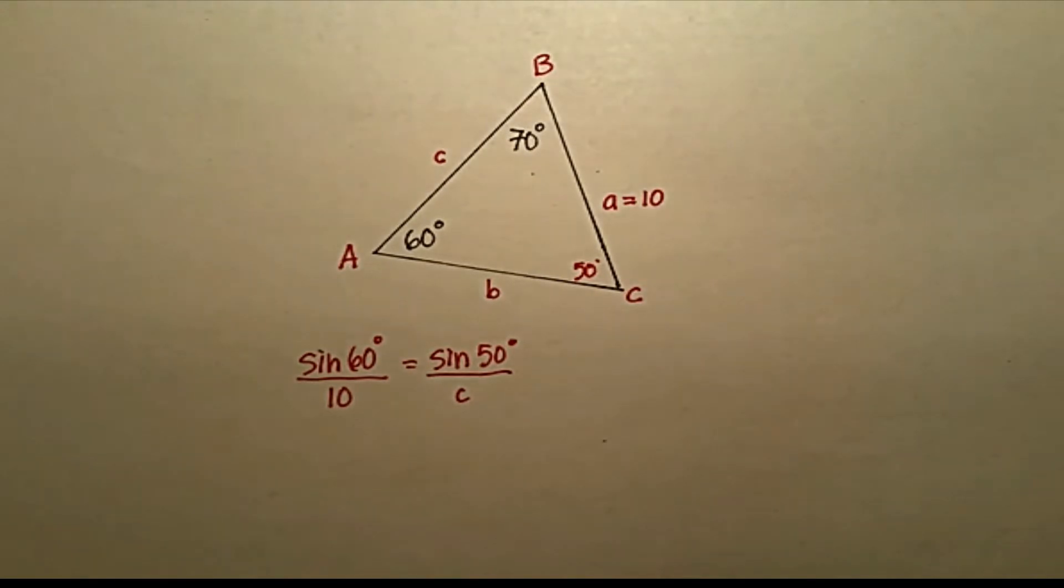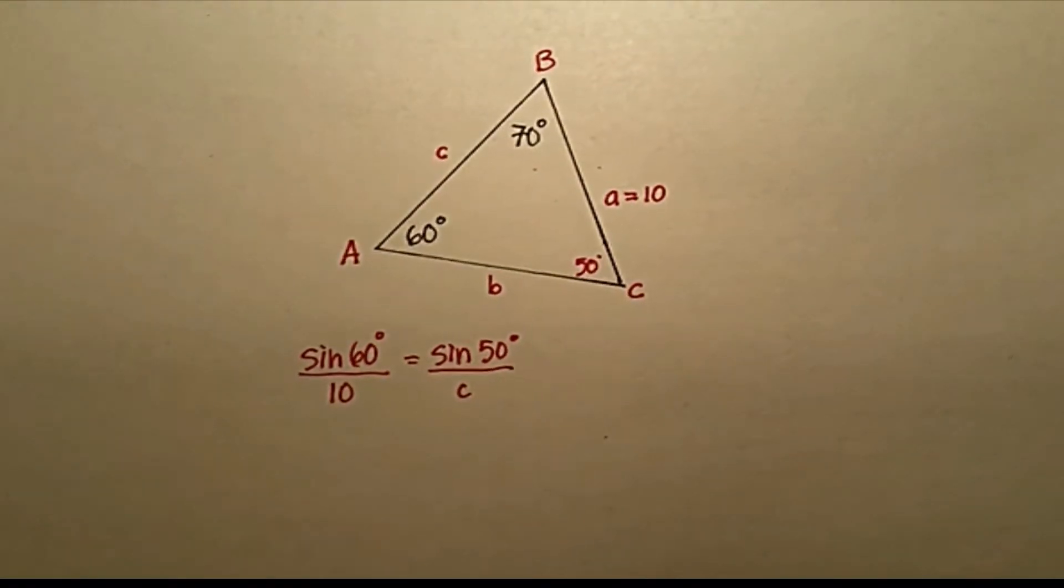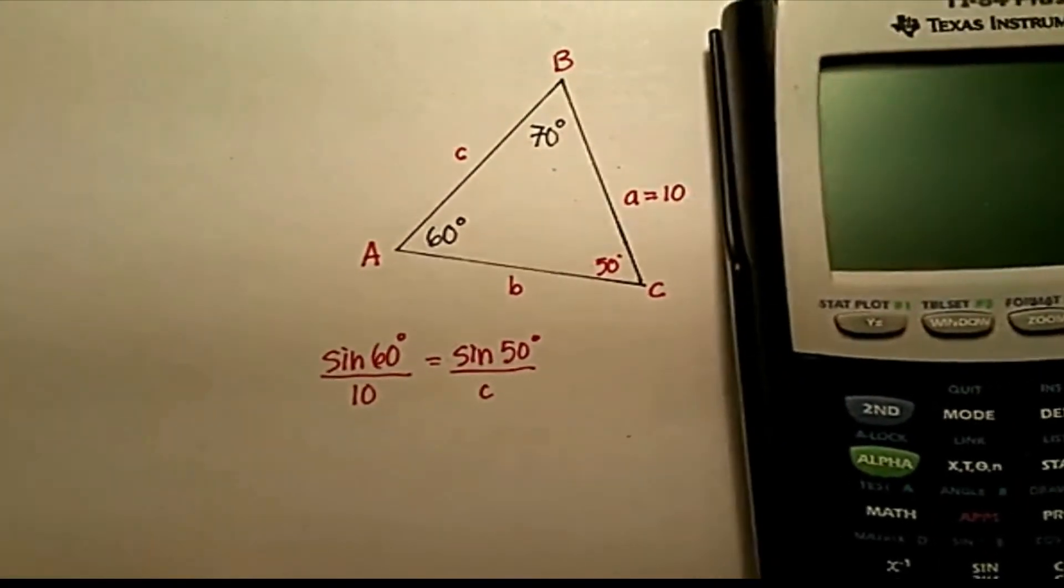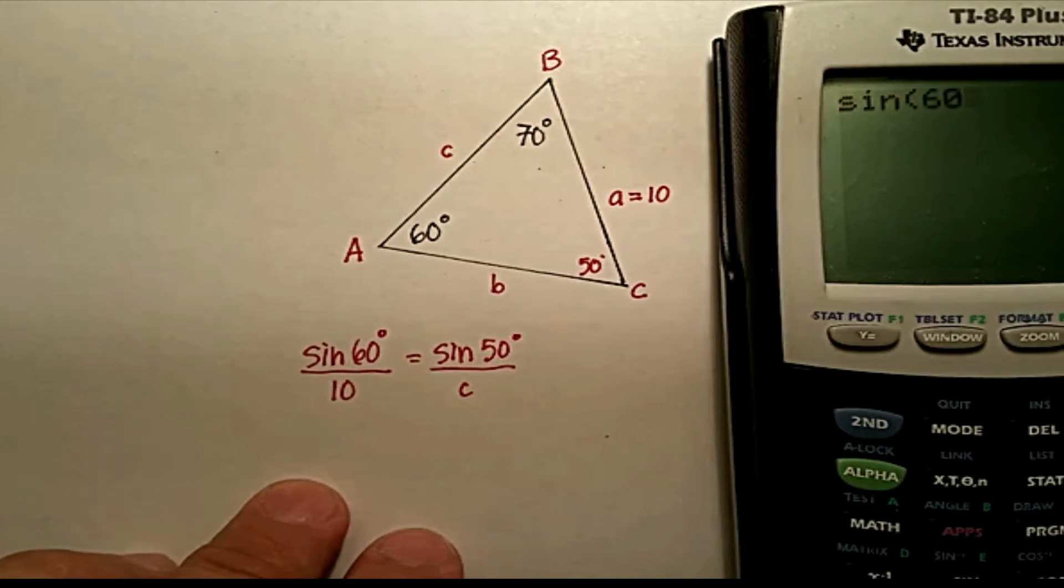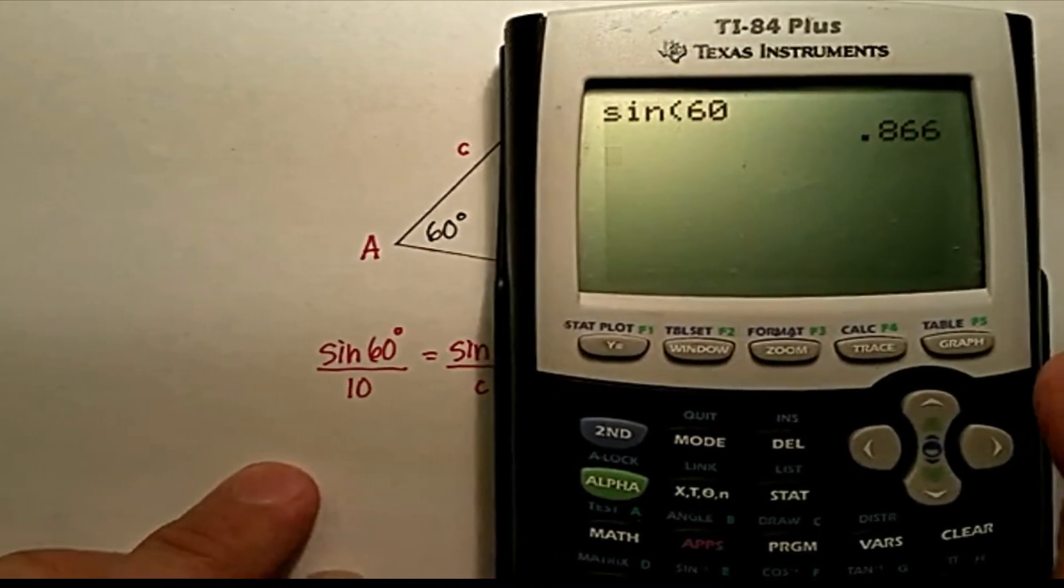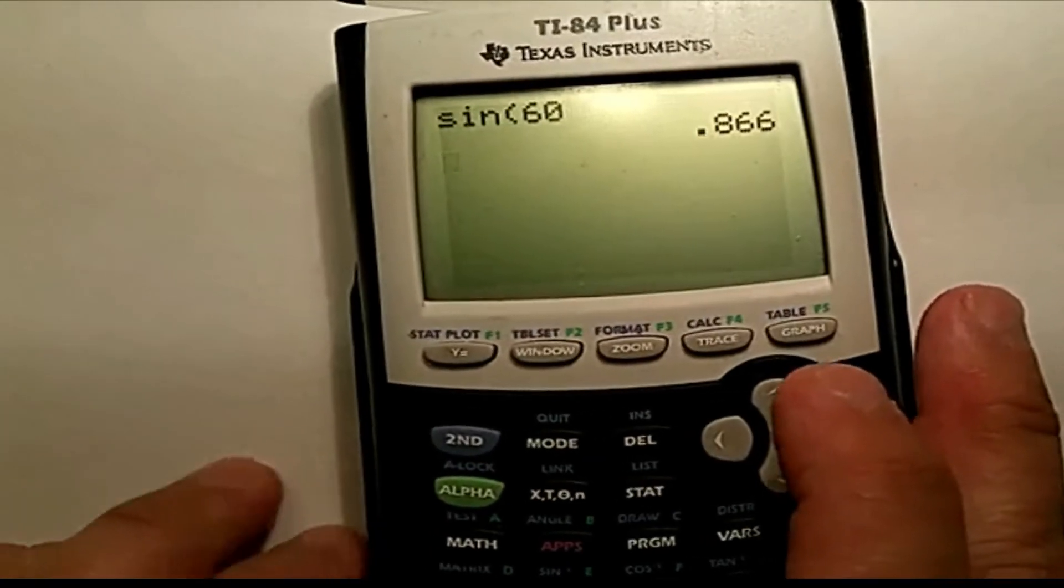Okay, so now I need to use my calculator. And what is sine of 60? So, sine of 60, let's turn it on actually, clear it. So, hit the sine button, 60. And that's equal to 0.866.